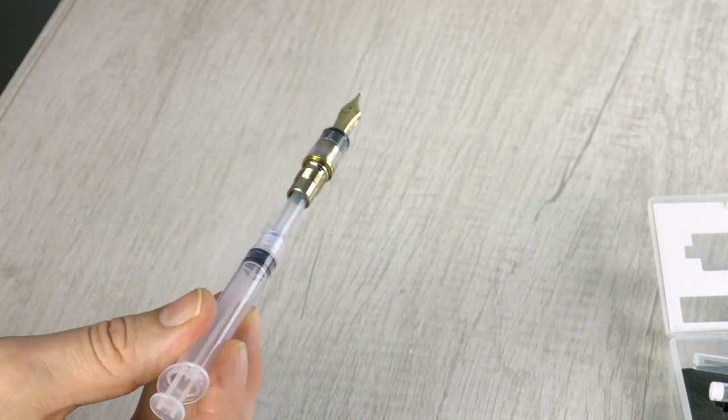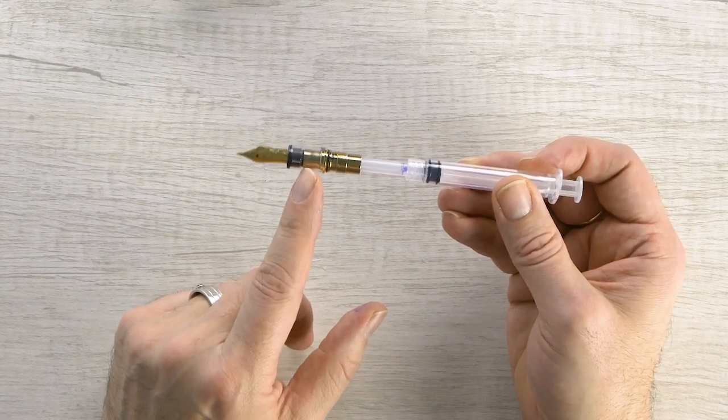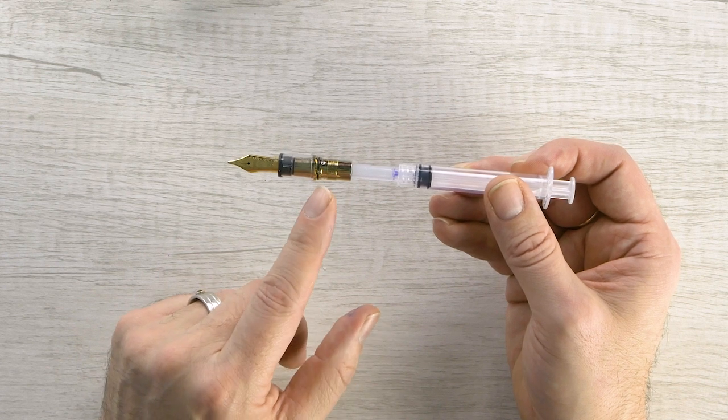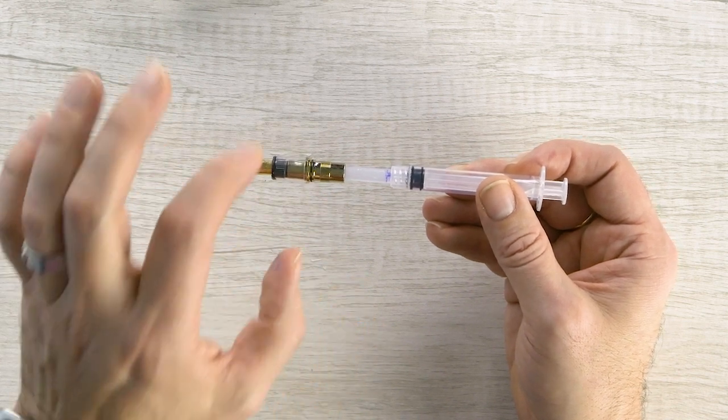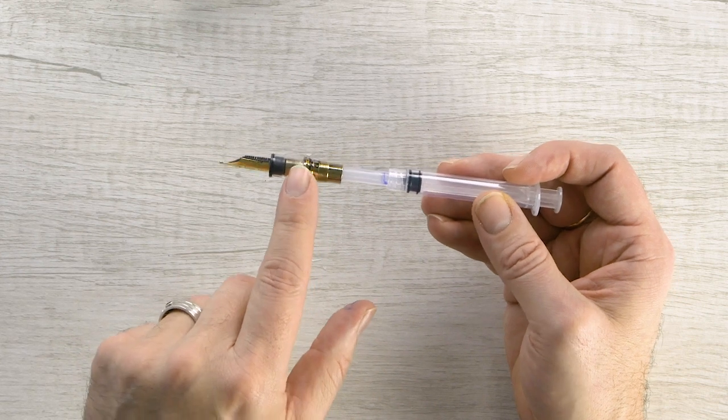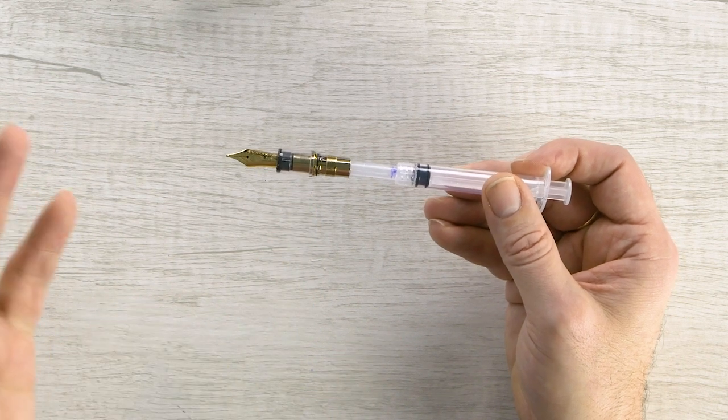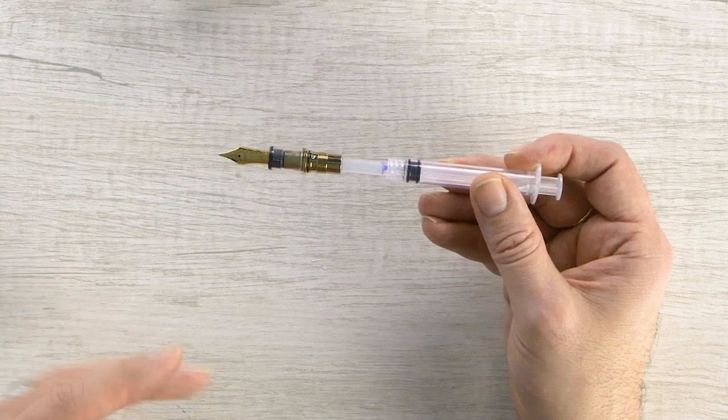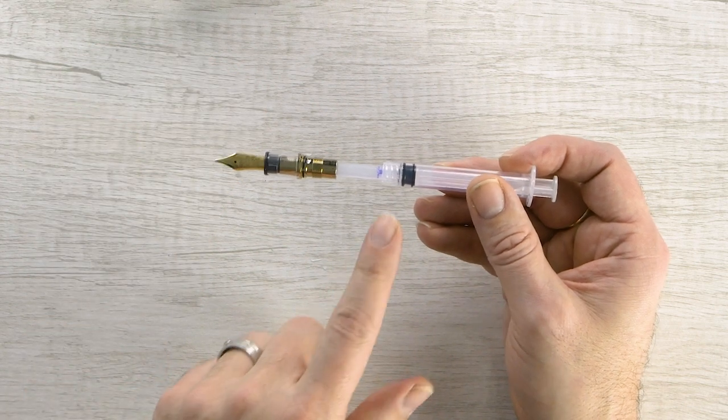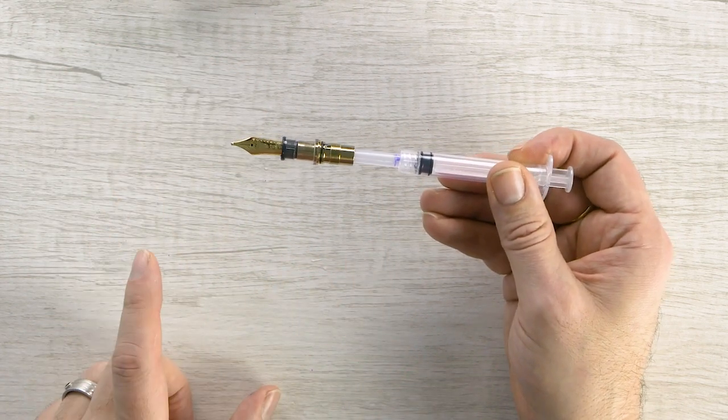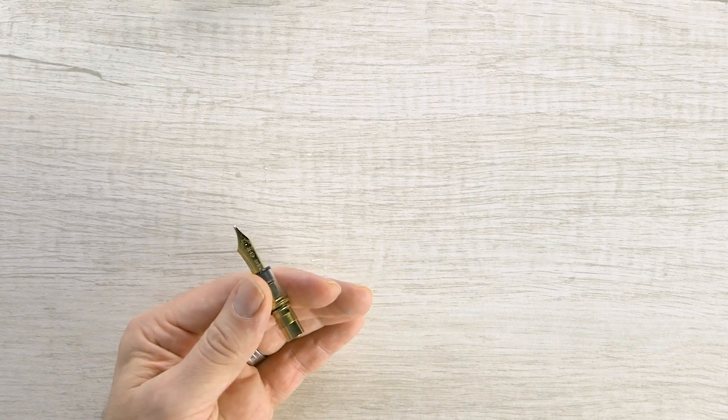One of the other nice things about this system is you know on Sailors that have a transparent section, these sections are not perfectly waterproof, they're not sealed, and sometimes if you take your section and put it under the faucet you can get water trapped inside between the section and the inside. And of course on most Sailor pens that have a black section or color matte section you're not going to see that, but on transparent sections you can see that if you put your pen under the faucet. With this you're not going to get that, it's going to flush it through just like it would with the cartridge or the converter and you don't have to worry about getting extra water in there.